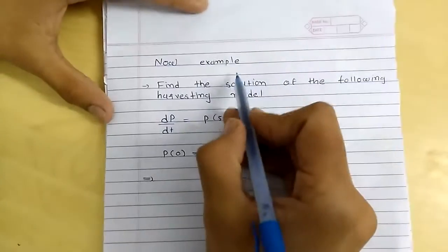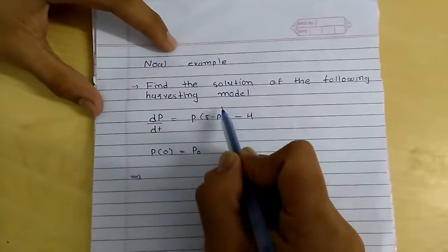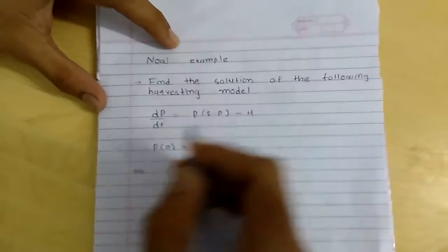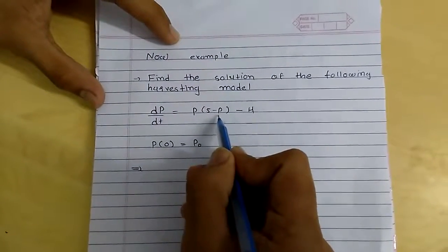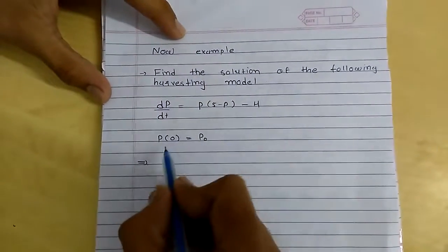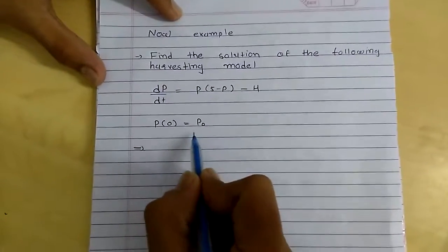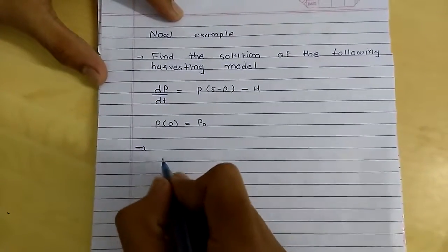Now, let's take an example. Find the solution of the following harvesting model: dp/dt equals p(5 minus p) minus 4, where p(0) equals p0.